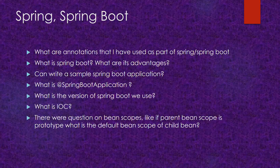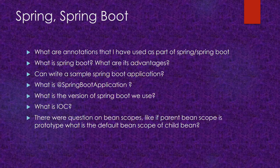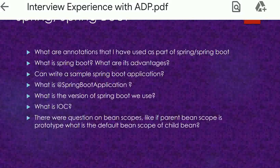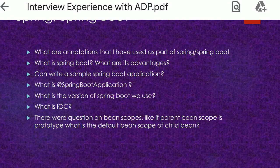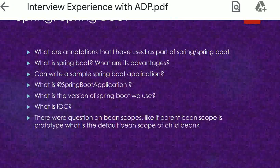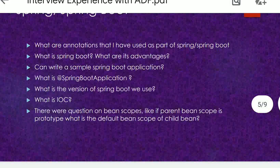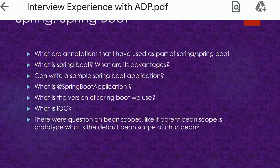Then there was a question: can you write a sample Spring Boot application? To write one, you need the starter dependencies, parent dependencies, and in the main class you add the @SpringBootApplication annotation. The @SpringBootApplication annotation is actually a combination of three annotations: @ComponentScan, @EnableAutoConfiguration, and @Configuration. Spring Boot combined all three into this single annotation, which was introduced around version 1.2 or 1.3.